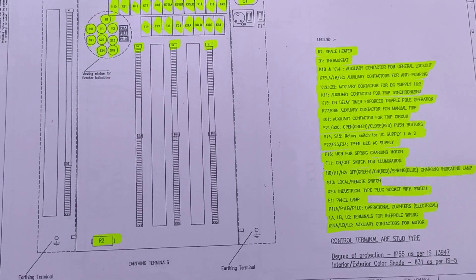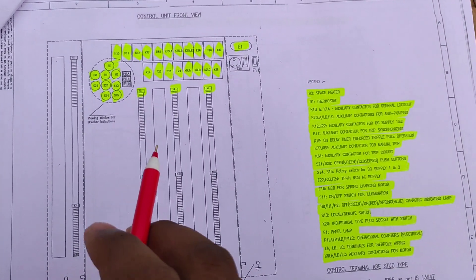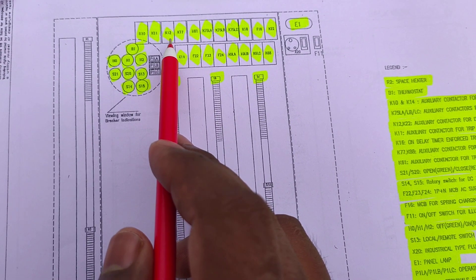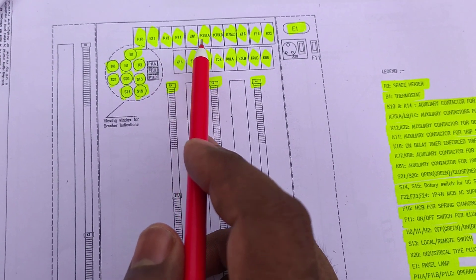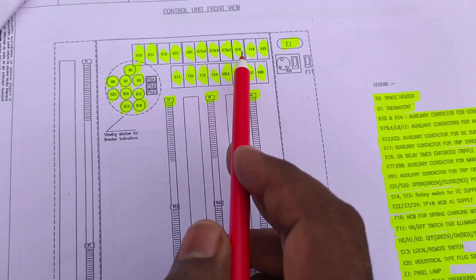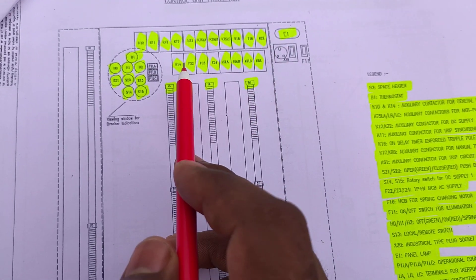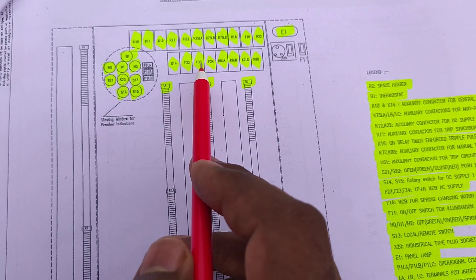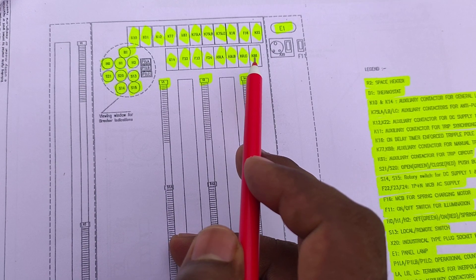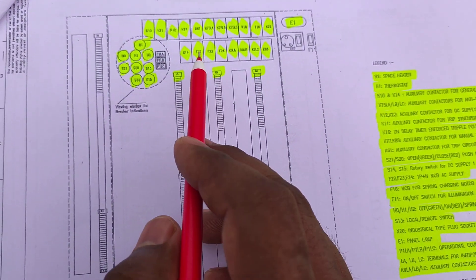Now discussing the various instructions and various points given here. The K-series components present include: K10, K11, K12, K77, K61, K75 LA, K75 LB, K75 LC, K16, F16, K22, E1, E14, F22, F23, F24, K9 LA, K9 LB, K9 LC, and K88. These are different types of MCBs and contactors present here.